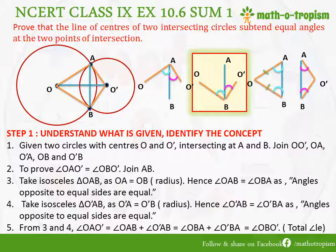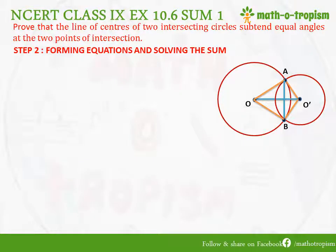From these results, angle OAO' is the addition of adjacent angles OAB plus O'AB, which equals angle OBA plus angle O'BA, which is nothing but the total angle OBO'. Thus we have proven that angle OAO' is equal to angle OBO'.